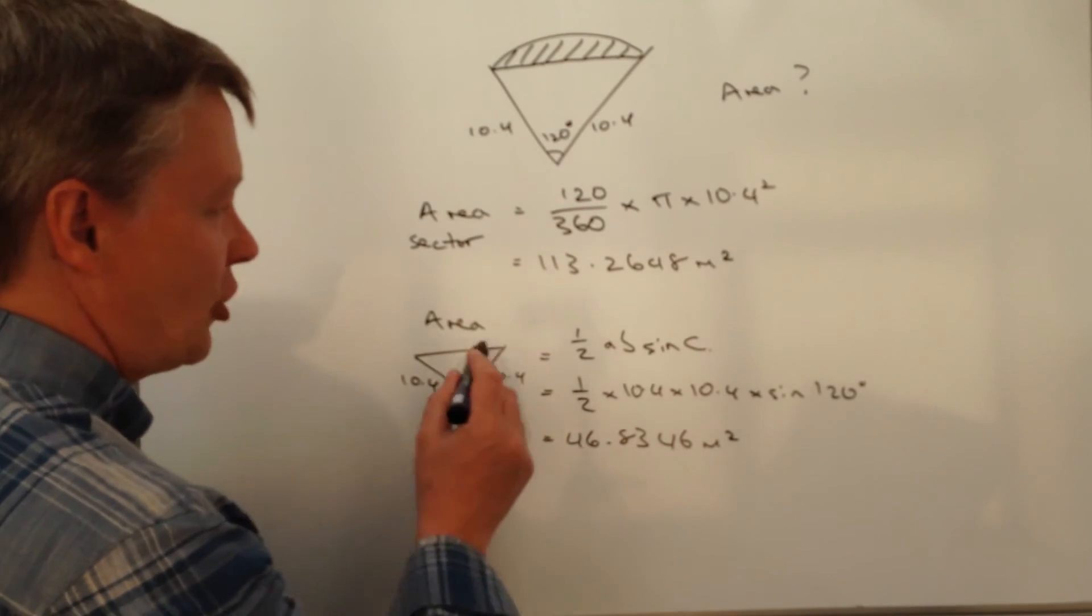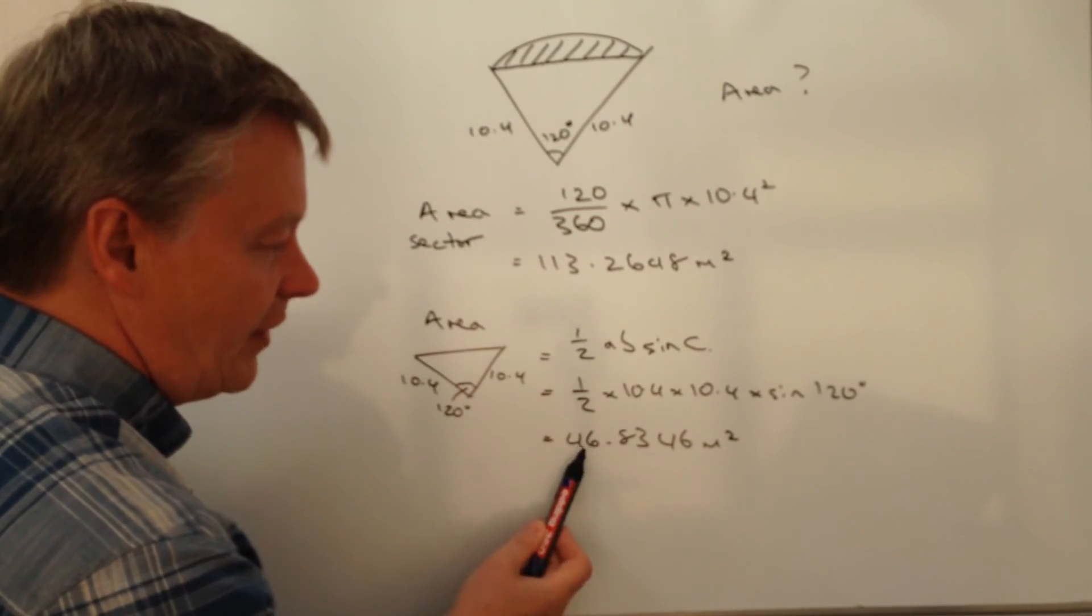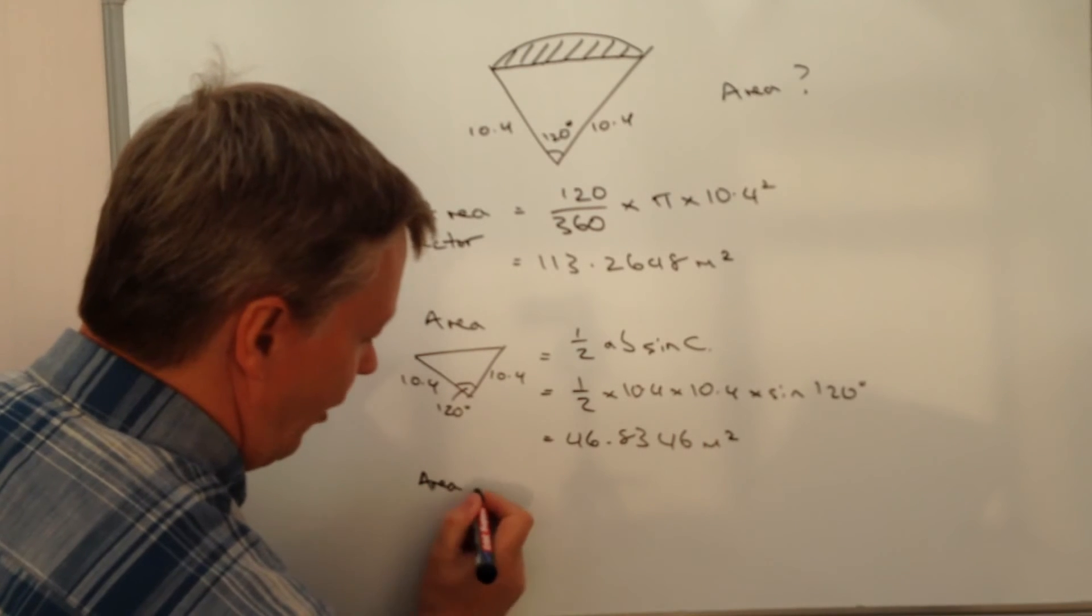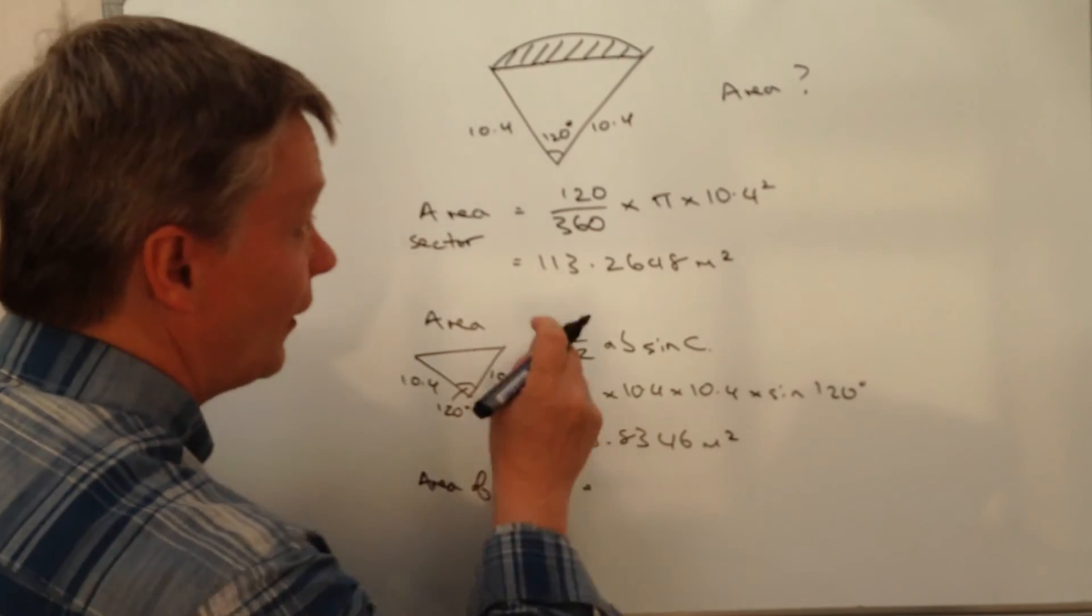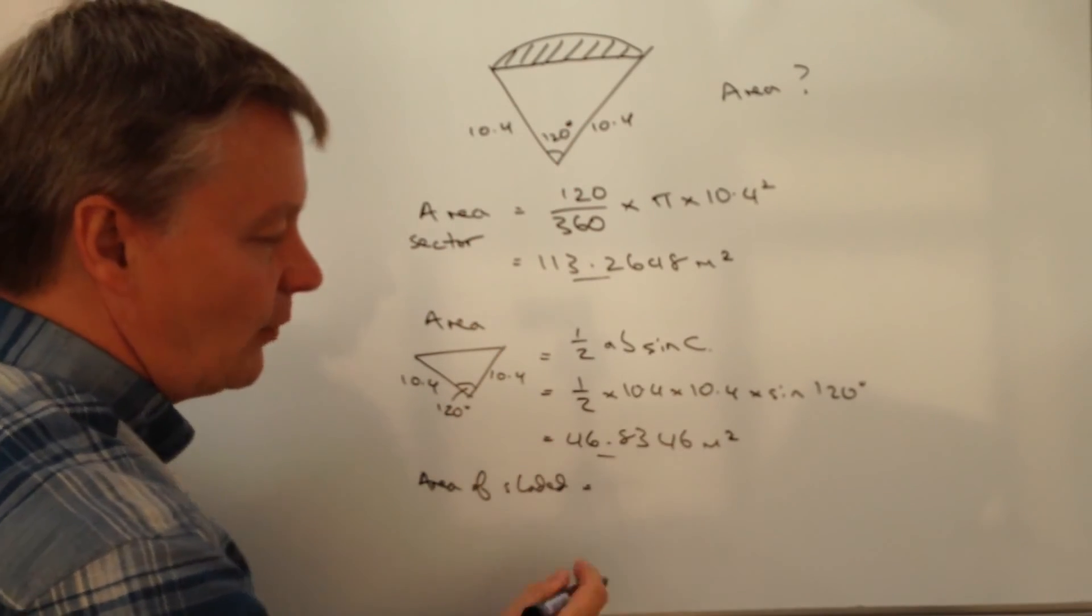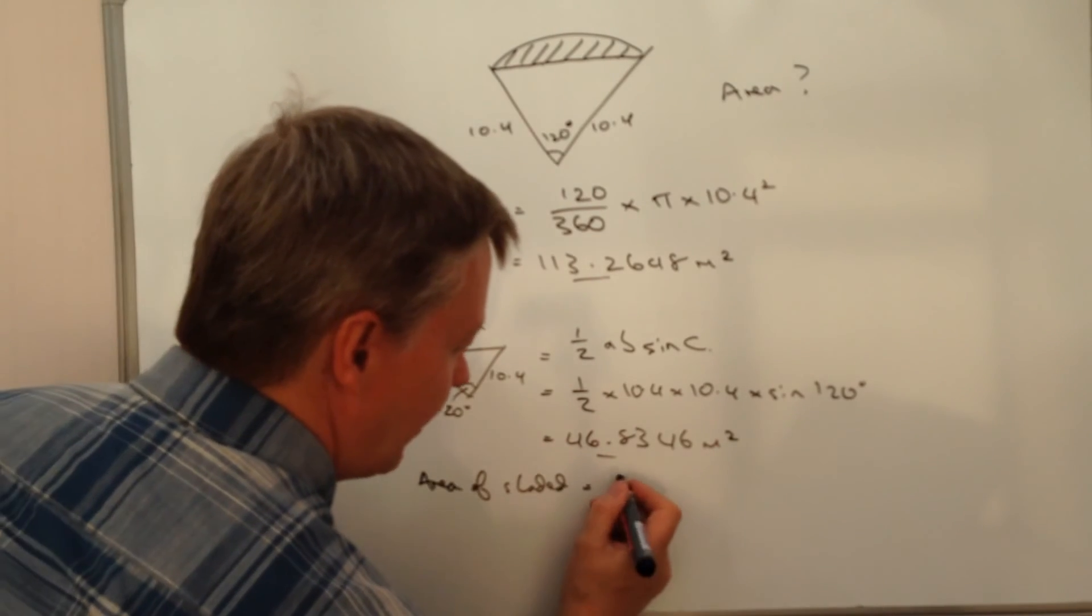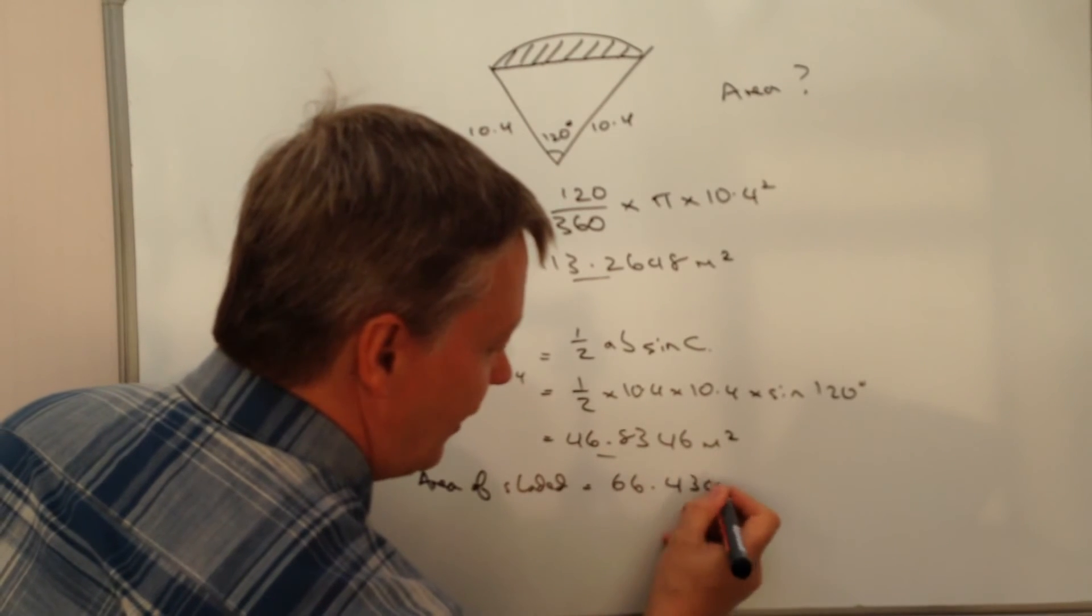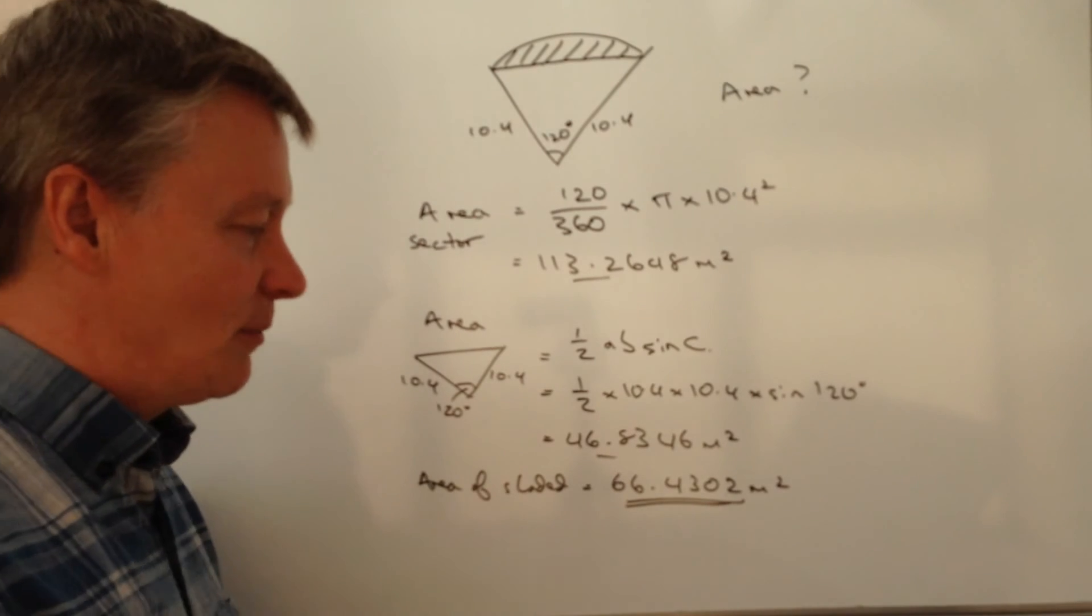So now I've got two separate calculations. If I take one, if I take this away from this, I'm going to end up with the area of the shaded bit, which is this bit right at the very top, which is going to be 113 take away 46.8346. And that's going to give me 66.4302 meters squared. And that's the answer to my question.